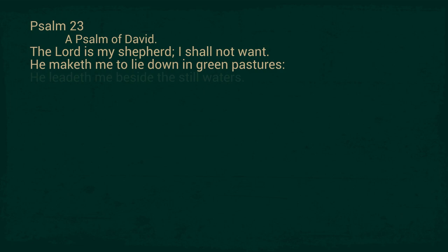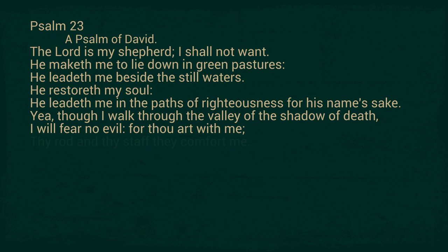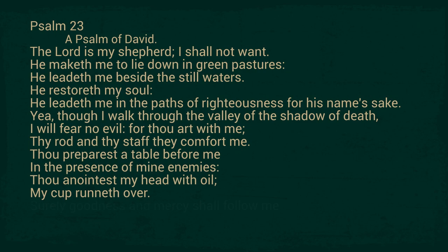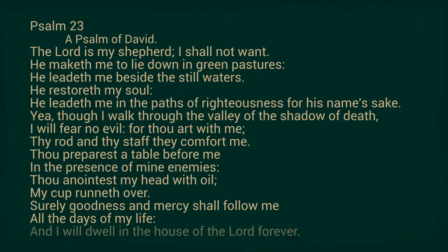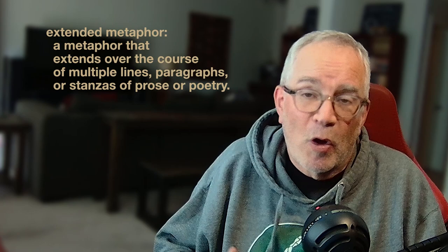Here's Psalm 23, a Psalm of David: 'The Lord is my shepherd, I shall not want. He maketh me to lie down in green pastures. He leadeth me beside the still waters. He restoreth my soul. He leadeth me in the paths of righteousness for his name's sake. Yea, though I walk through the valley of the shadow of death, I will fear no evil. For thou art with me, thy rod and thy staff they comfort me. Thou preparest a table before me in the presence of mine enemies. Thou anointest my head with oil, my cup runneth over. Surely goodness and mercy shall follow me all the days of my life, and I will dwell in the house of the Lord forever.' This poem is an example of an extended metaphor — it extends through the whole poem. The Lord as shepherd finds pastures with good grass near calm waters, leads on good sheep paths, and protects with the rod and staff.